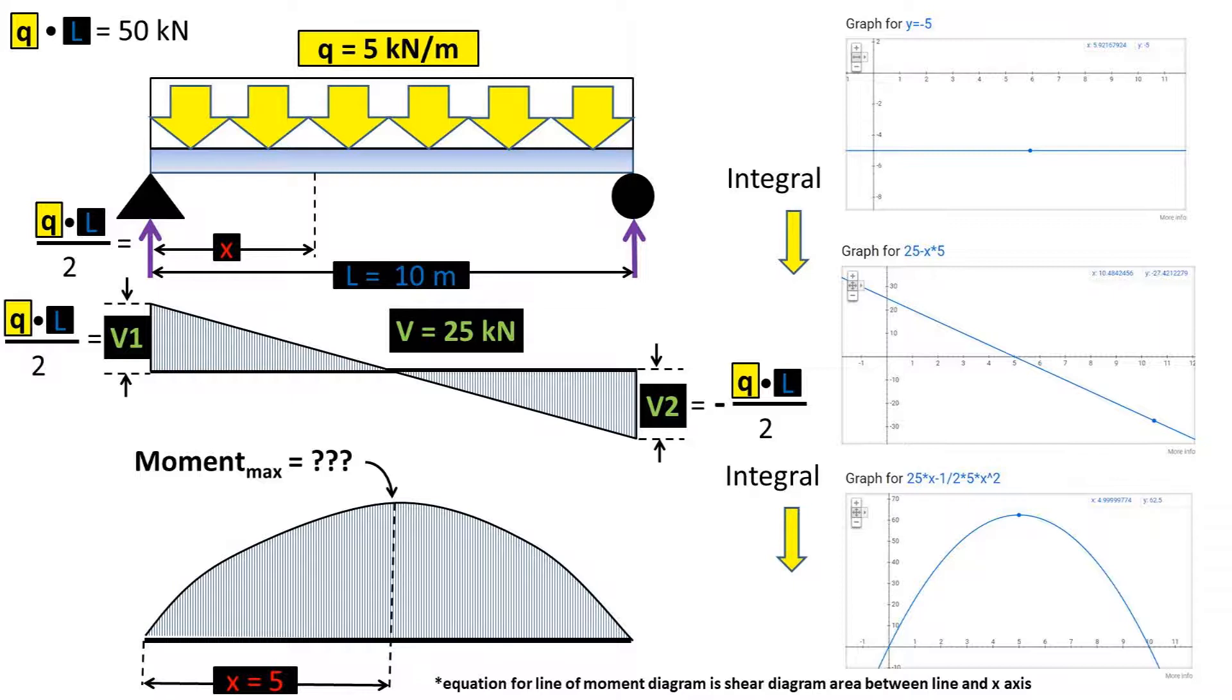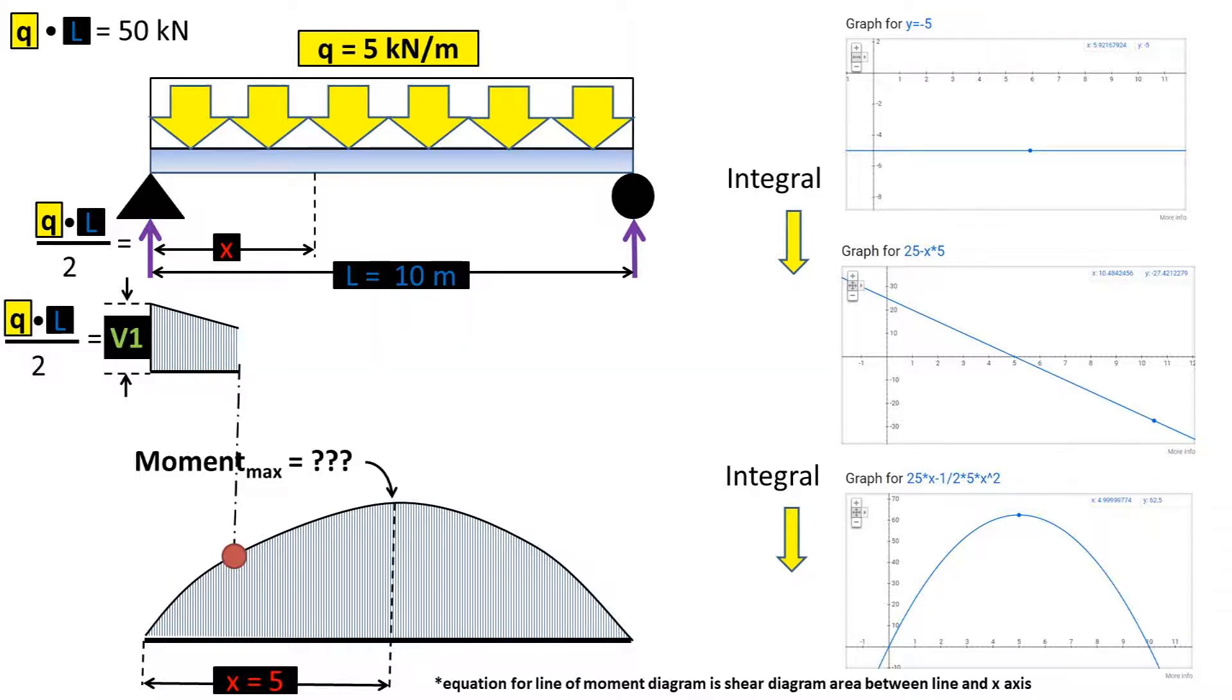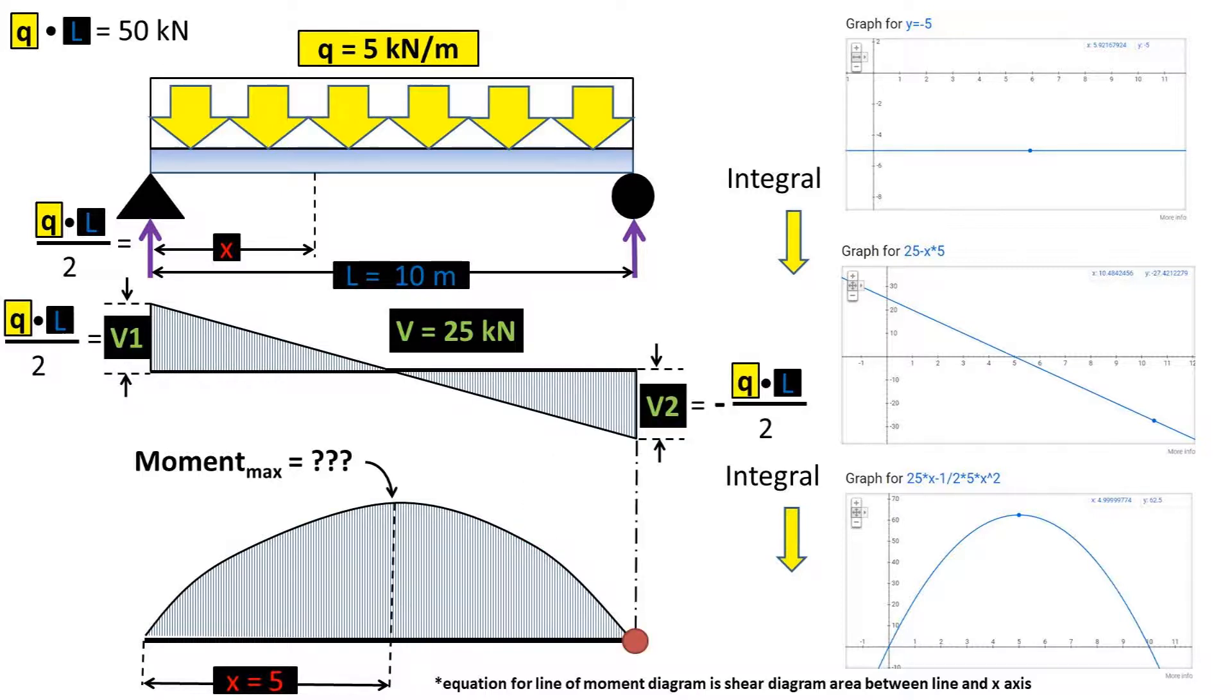Once again, if we integrate the shear force equation, or in other words, find the area between the line and the x-axis, we get the equation for the line of the moment diagram. To further drive this point in, I have placed a red point on the moment diagram equation line. This red point represents the area on the shear diagram up to that point. So the area is added up up until we go below the x-axis in our negative. Once it is negative, we subtract this area when adding up the area.